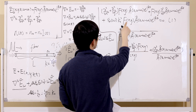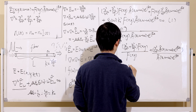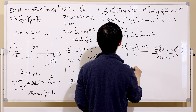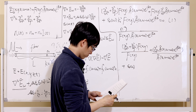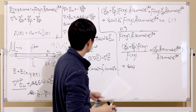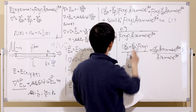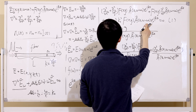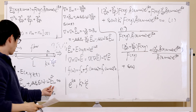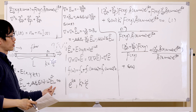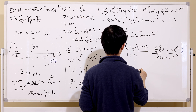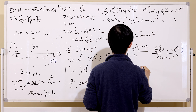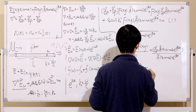After dividing through, the epsilon_r term gives epsilon_r·k-naught², and combining with the other terms we get an equation equal to zero. This sets up the separation of variables.